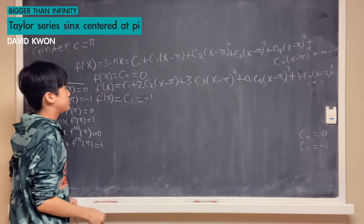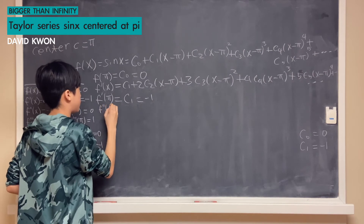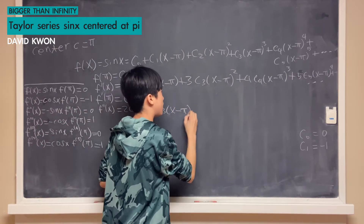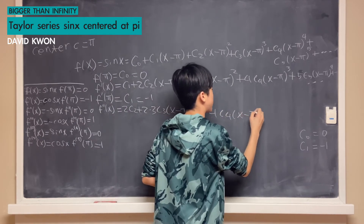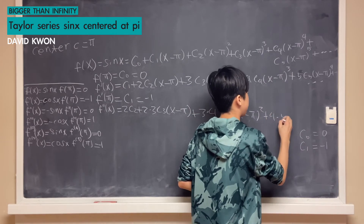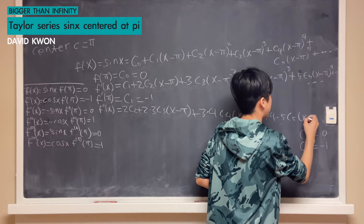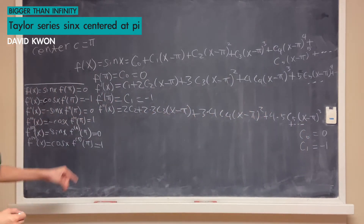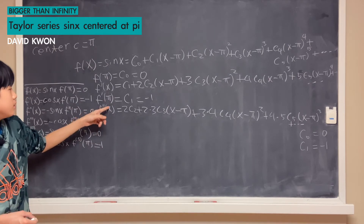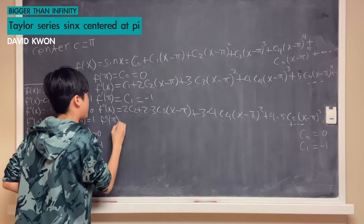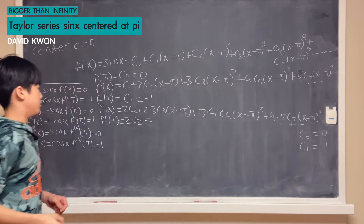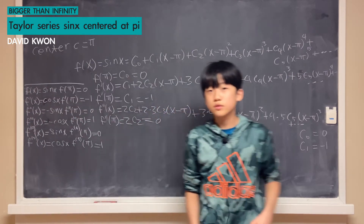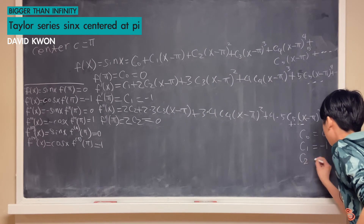Now we differentiate f′(x) to get f″(x) equals 2·c₂ plus 2·3·c₃·(x−π) plus 3·4·c₄·(x−π)² plus 4·5·c₅·(x−π)³ plus dot dot dot. Setting x equal to π, we get f″(π) equals 2·c₂. Since f″(π) equals 0, our c₂ equals 0.